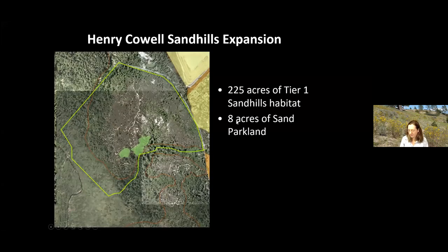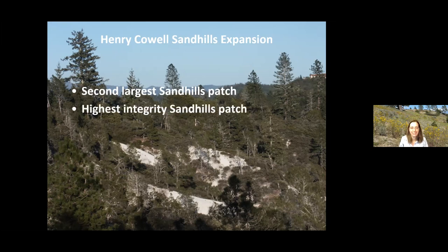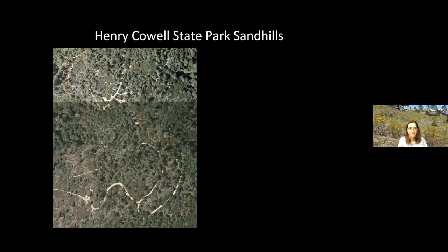Henry Cowell has 516 acres of Sandhills habitat. We ranked it as tier one Sandhills habitat. There's eight acres of sand parkland just as you come out at Eagle Creek on the trail — a very small patch — but the rest is really great Sandhills chaparral. Most of the Sandhills expansion is exquisite. I've heard it's one of the last places the roadrunner was seen — it's relatively intact and away from residential development. Second largest patch, highest integrity, and one of the last two known kangaroo rat populations. Super important for the long-term persistence of Sandhills species.